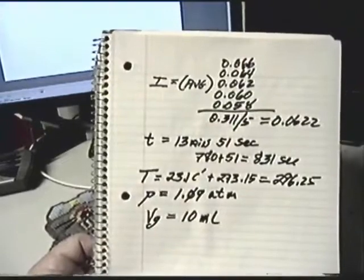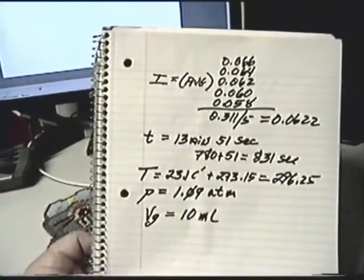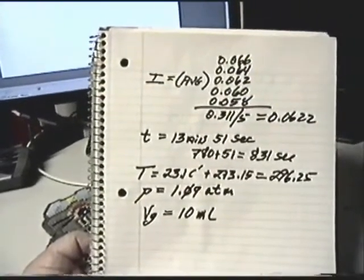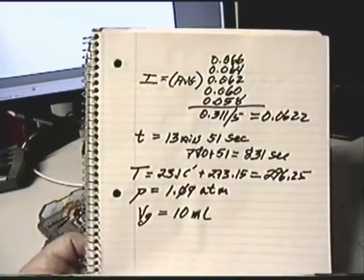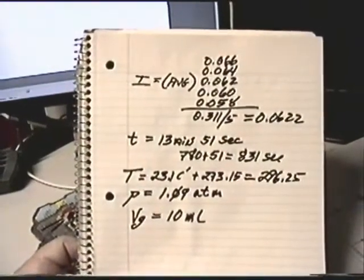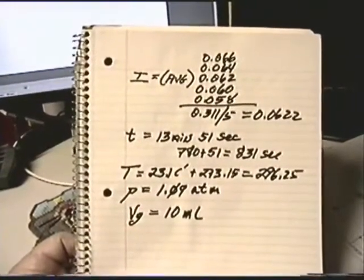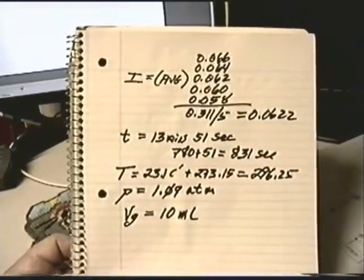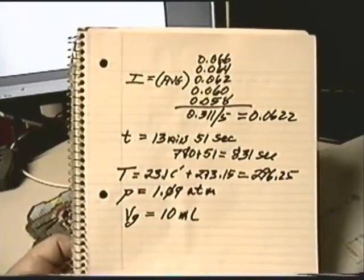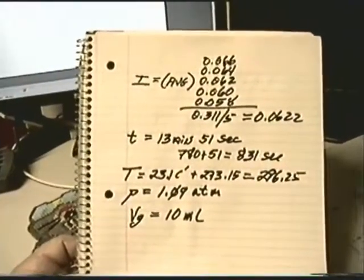Starts out at 66 milliamps plus or minus 2 and ends up in this case that we just ran 54. But the run here is 58 plus or minus 2 which comes up to 311 milliamps averaged by 5 measurements is 0.62 or 62.2 milliamps.